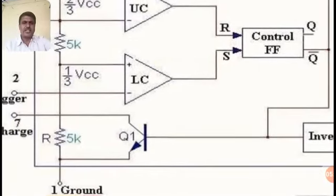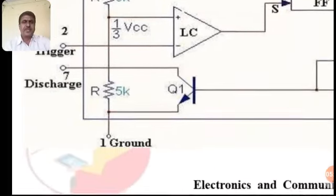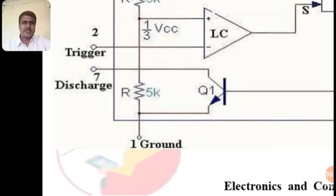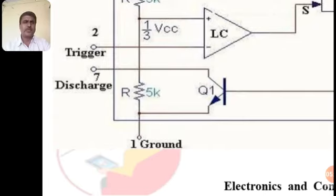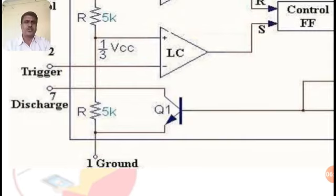Q-bar is also connected to the base of internal transistor Q1 — an NPN transistor. The emitter of Q1 is pin 1 (ground) and the collector is pin 7 (discharge pin). An external capacitor connected here discharges through the collector-emitter path to ground. So pin 7 is the discharge pin and transistor Q1 is called the discharge transistor.